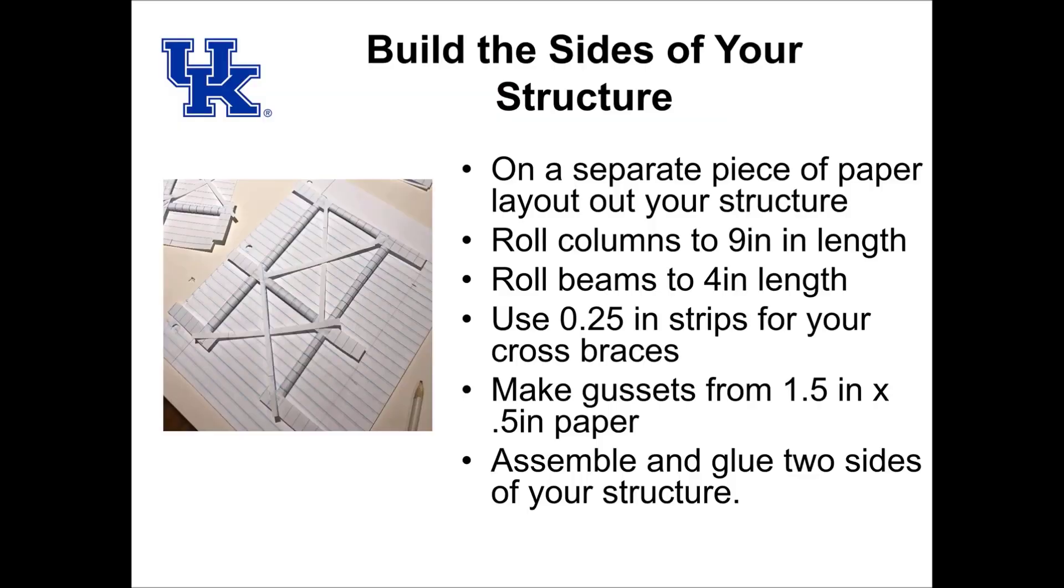With that, we can now start building our tower. We're going to make continuous nine-inch pieces for our sides, use the same thickness of material for our cross members, and develop cross braces out of quarter-inch material. Then we're also going to apply gussets out of 0.5 by 0.5 inch pieces of paper. We're going to assemble it one side at a time.